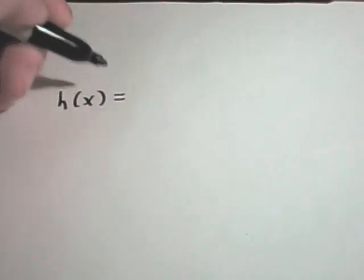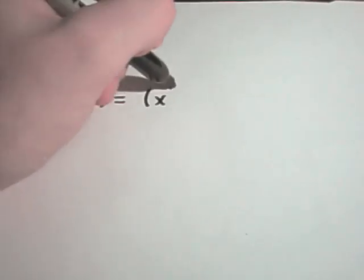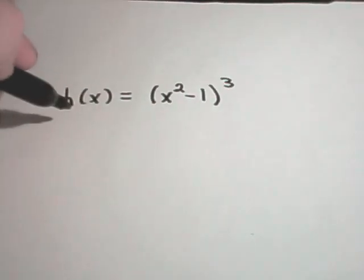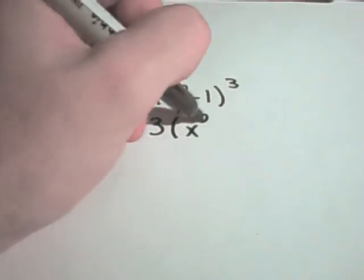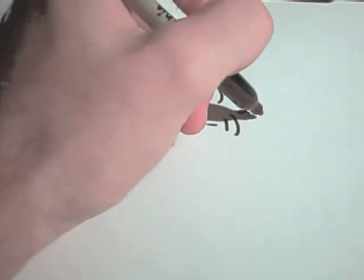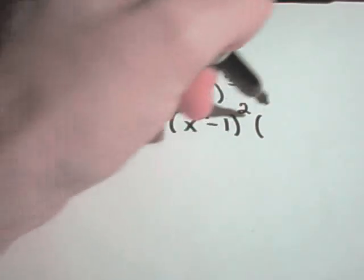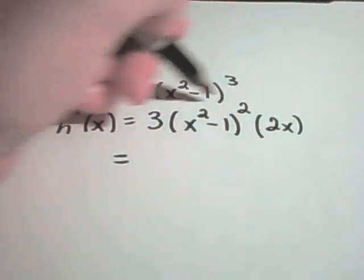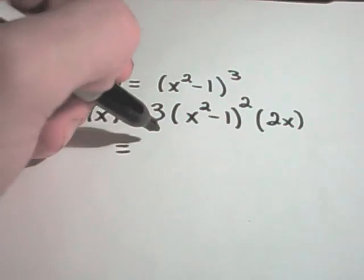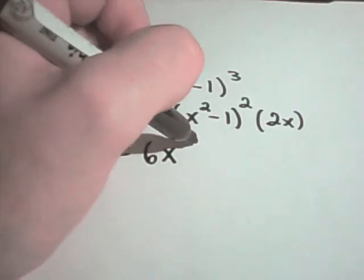Let's do one a little more complicated. The only thing that's going to get tricky is really just taking the first and second derivatives. Suppose we have f(x) = (x² - 1)³. We'll have to use the chain rule: the 3 comes out front, we leave the inside alone and reduce the exponent by 1, then multiply by the derivative of the inside, which gives us 2x. Before taking the second derivative, I clean up the first derivative as much as possible with algebra — that'll make taking the second derivative easier.